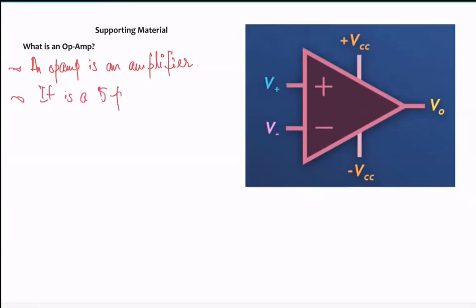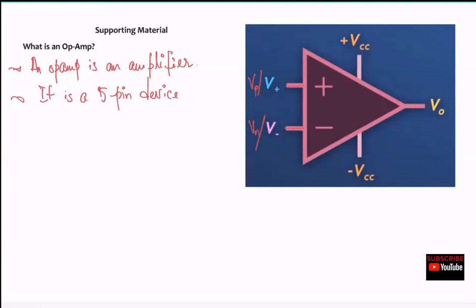The op-amp is a five-pin device. We have been mostly focusing on three pins: V-plus, V-positive, or V-negative, V-minus — the negative terminal, the positive terminal, and V-naught. The other two pins may not appear in a schematic symbol, but that doesn't mean they don't exist — it's just assumed they are there.